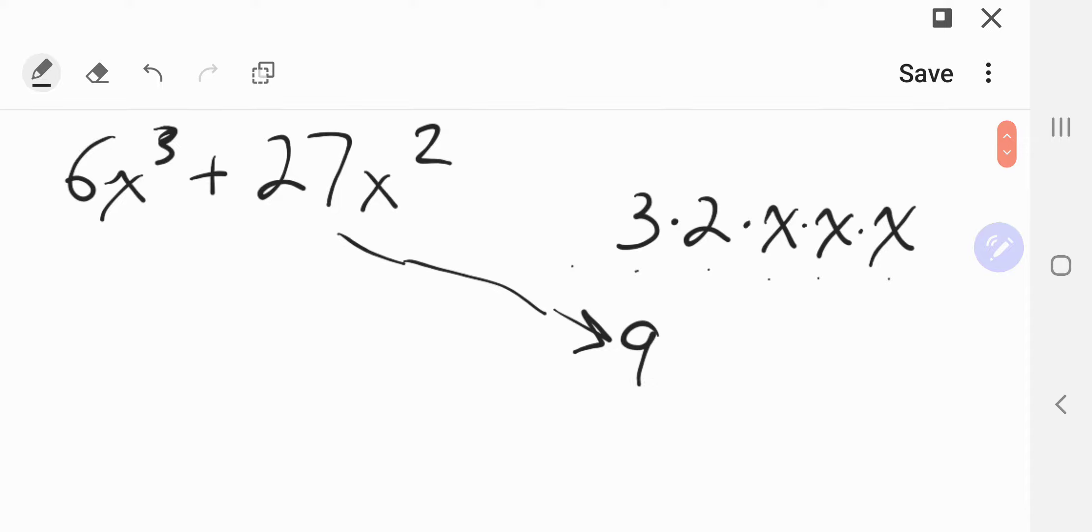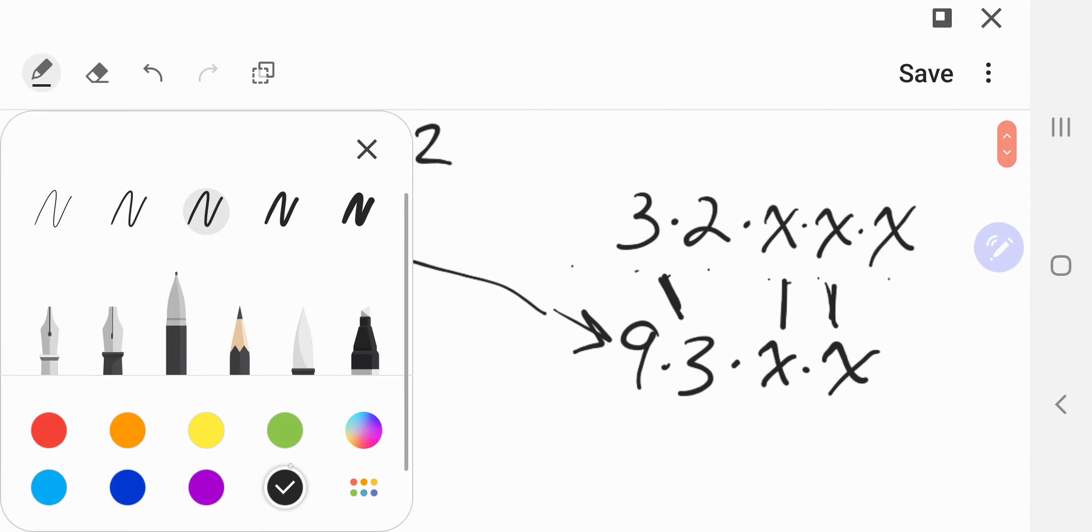It is 9 times 3 times x times x. What ingredients are the same? Well, there's a 3 times 3, and there's an x and an x. So that is what we can factor out.